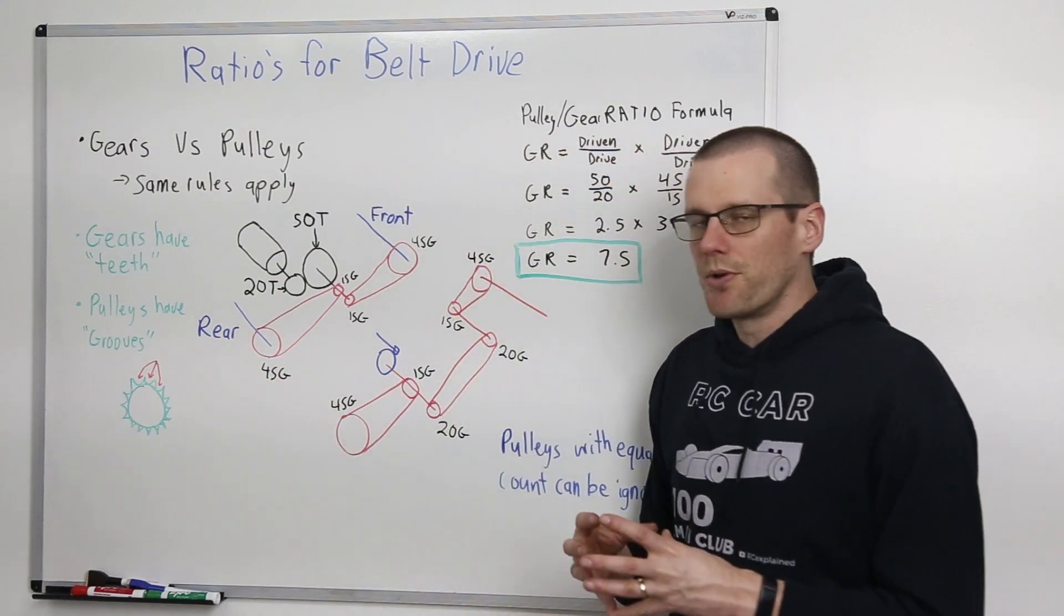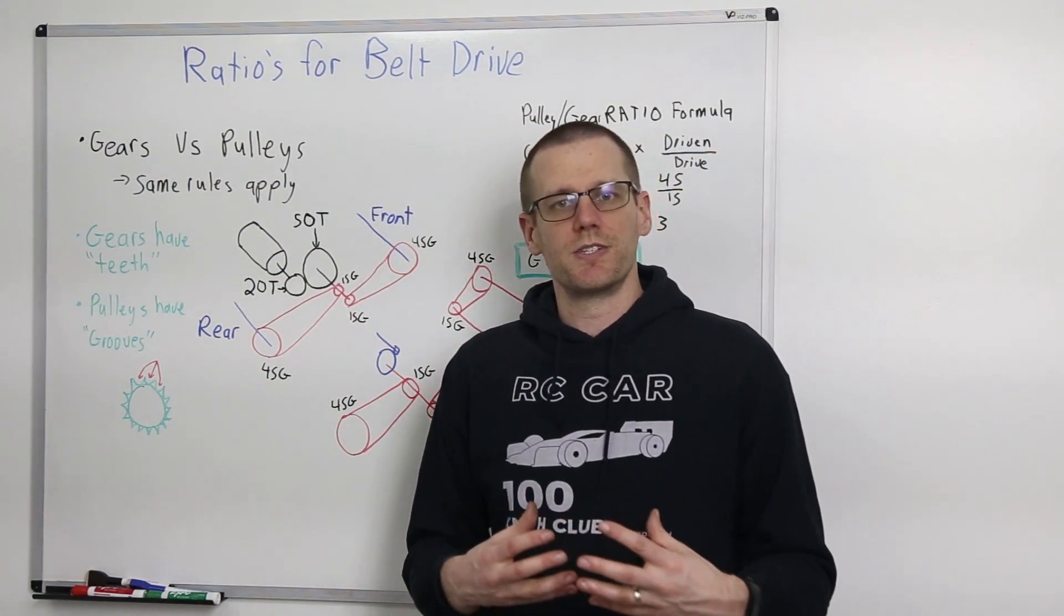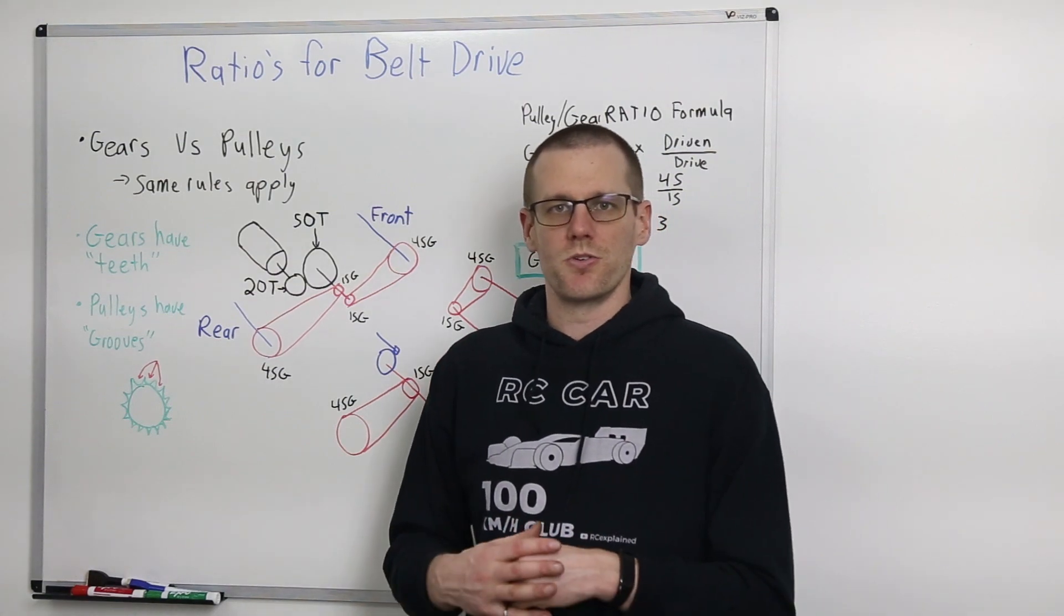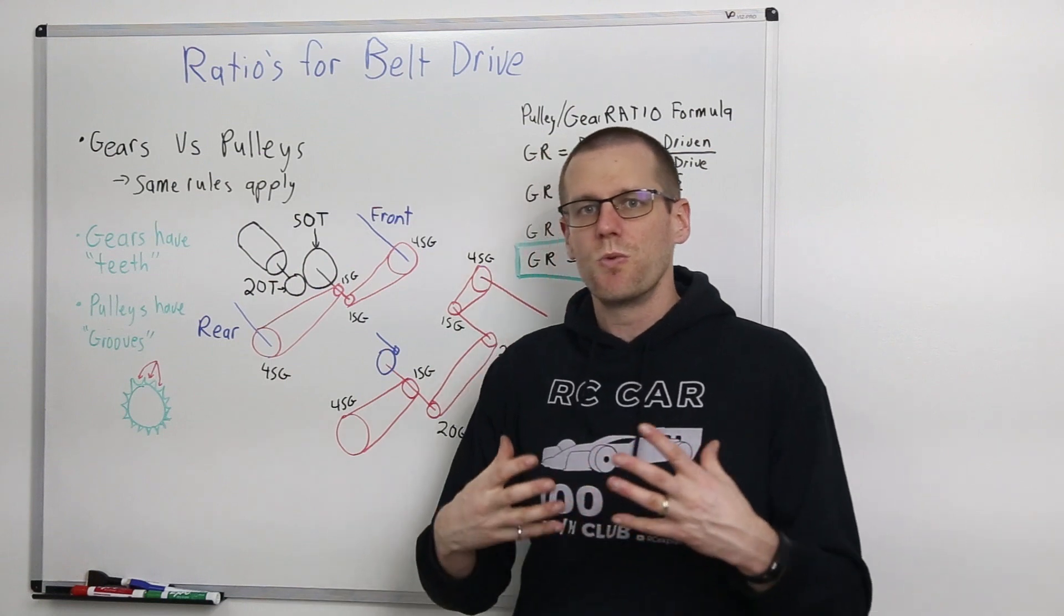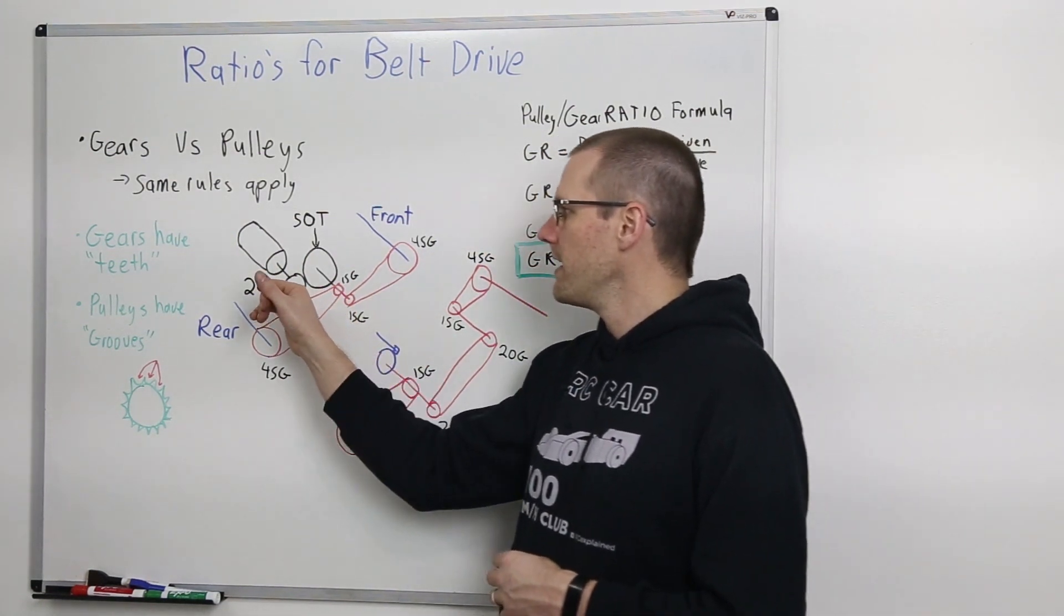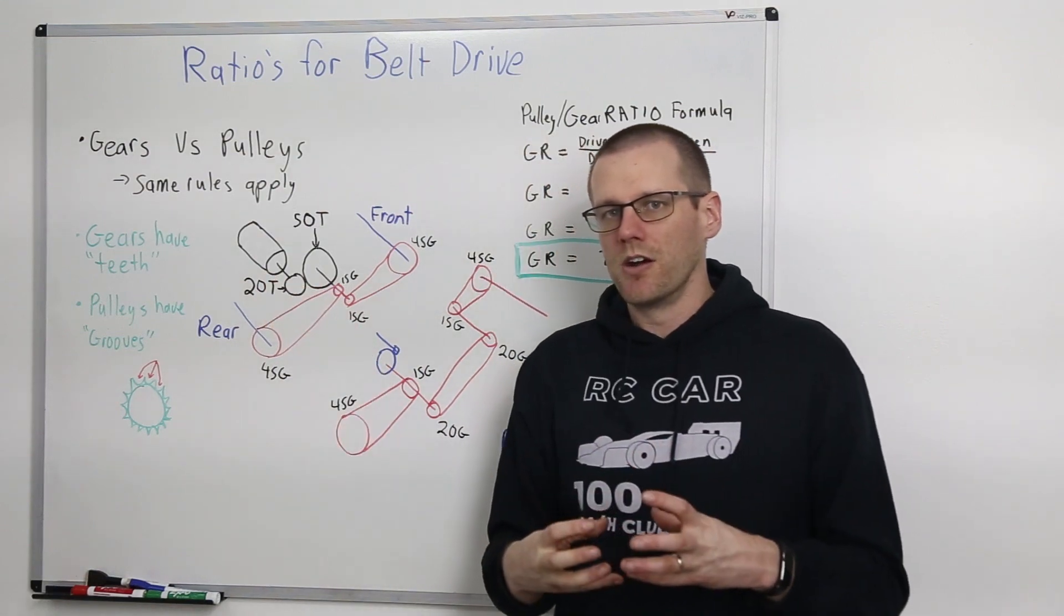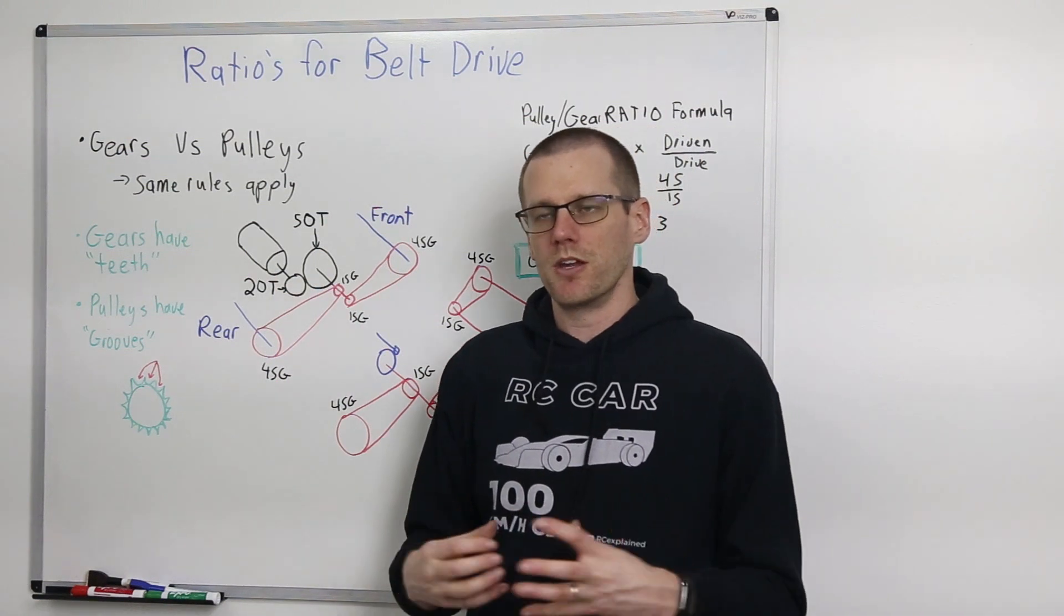So now let's go through an example and identify where we'll actually see these types of systems being used in our radio control car. The first thing we have is we'll start right at our motor. This could work the same if it was a nitro engine as well. Here you have a 20 tooth gear, and that's going to be your pinion gear driving this 50 tooth spur gear.